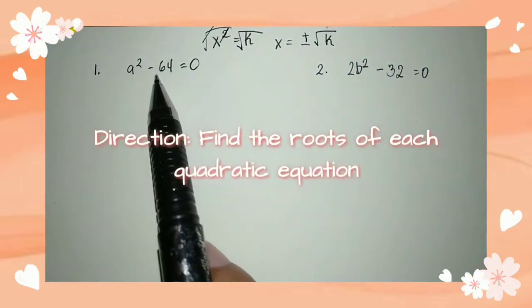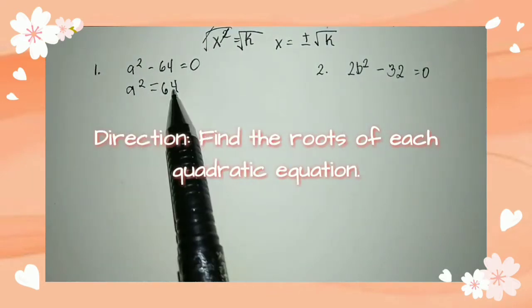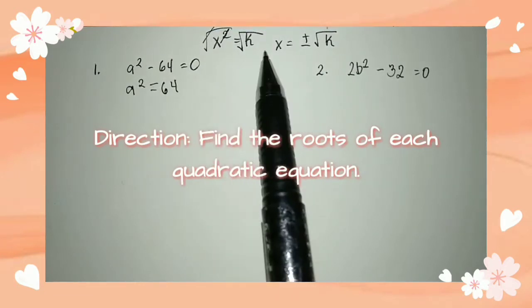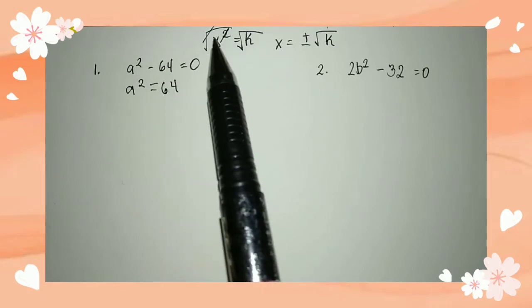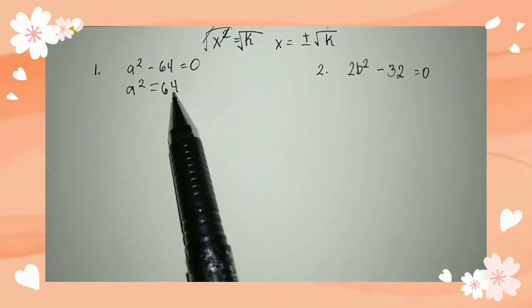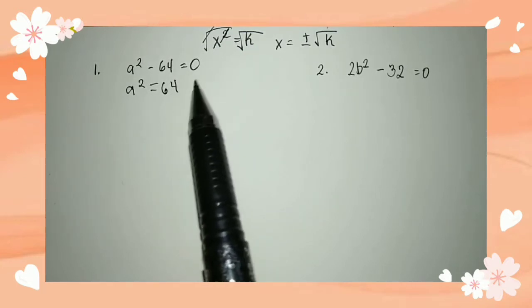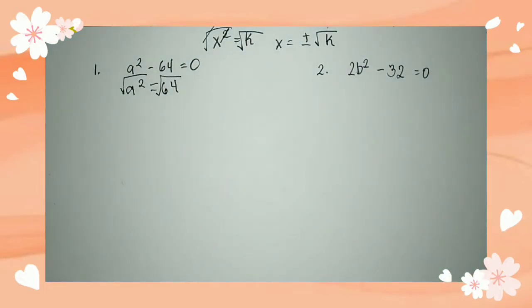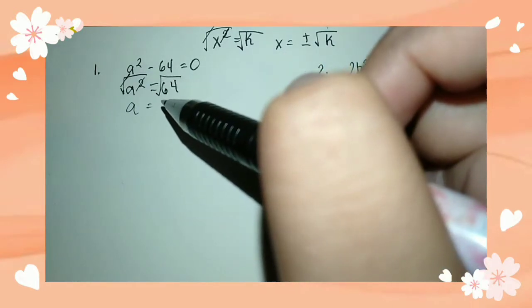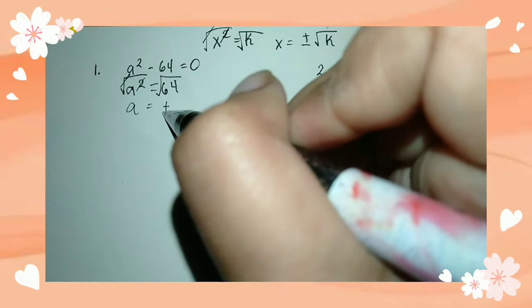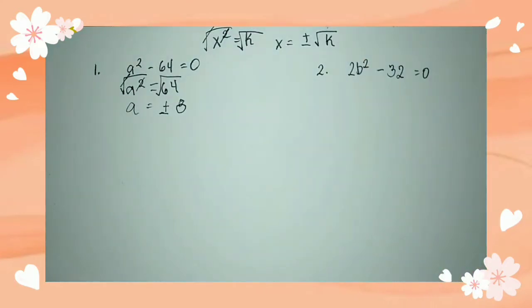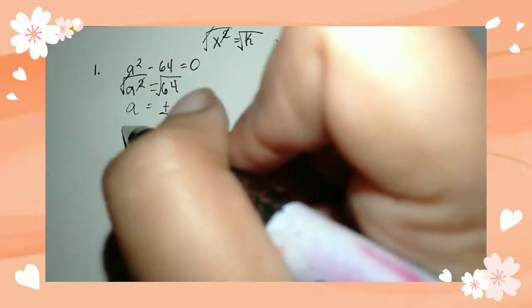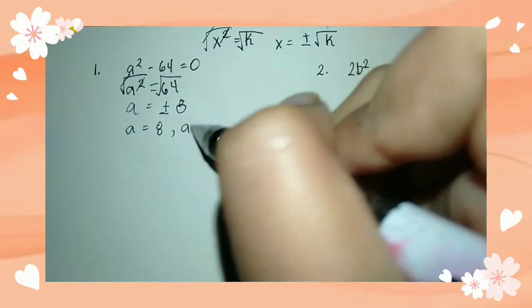For example, number 1, we have a squared minus 64 is equal to 0. We reformat it to x squared equals k by transposing negative 64 to the other side, so it becomes positive 64. We put a square root on both sides: square root of a squared equals square root of 64. Cancel out the square root and squared. Computing it, the answer is positive and negative 8. So we have two solutions: a is equal to positive 8 and a is equal to negative 8.